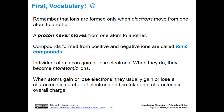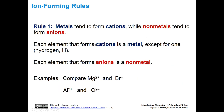When individual atoms gain or lose electrons, they usually gain or lose a characteristic number of electrons, so they have a characteristic overall charge. The first rule to keep in mind is that metals tend to form cations — metals lose electrons and non-metals pick them up. Metals tend to lose electrons and form cations.